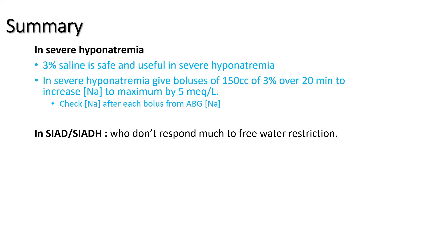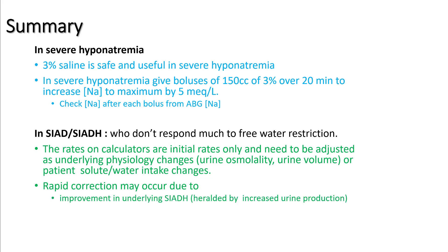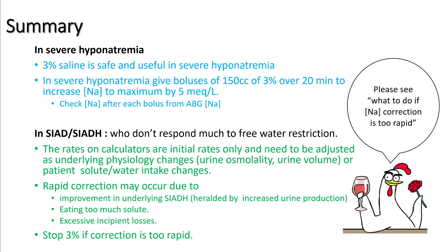In summary: hypertonic saline is given in severe hyponatremia and in SIADH patients who don't respond to free water restriction. In severe hyponatremia, 3% saline is safe — use boluses of 150 cc's over 20 minutes to increase sodium by a maximum of 5 mEq/L, and repeat sodium after each bolus. In SIADH, understand that calculator rates are initial rates only and need adjustment as underlying physiology changes or if the patient starts eating or drinking. Rapid correction may occur due to improvement in underlying SIADH, heralded by increased urine production, excessive solute intake, or excessive insensible losses. Stop 3% if correction is too rapid.